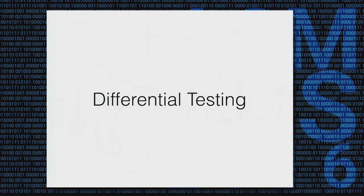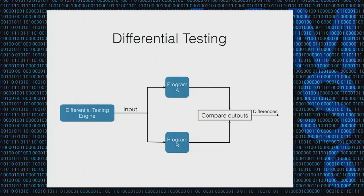A way to restate this question is: we would like to find an input such that it triggers JavaScript execution on the browser, and on the other hand, it is not considered an attack by the web application firewall. We cannot decide that by checking each program individually — we need a combined approach. The common way to do that is a testing technique called differential testing, which is based on a very simple idea. You have a differential testing engine that generates inputs in a black box manner.